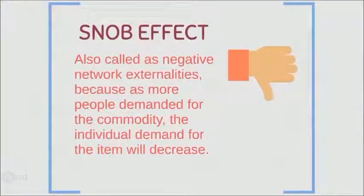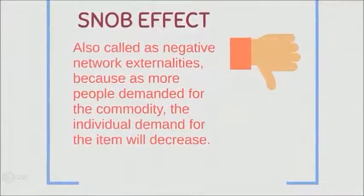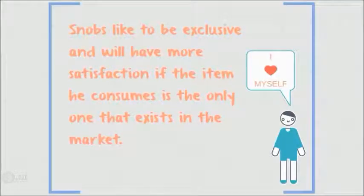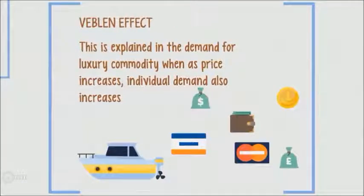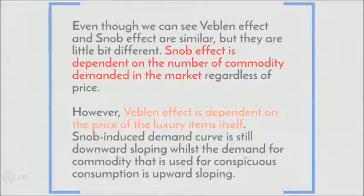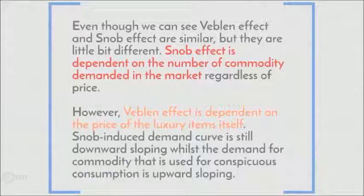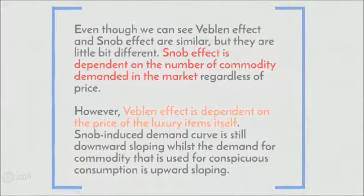The snob effect is also called negative network externalities because as more people demand the commodity, the individual demand for the item will decrease. Snobs like to be exclusive and will have more satisfaction if the item they consume is the only one that exists in the market. The Veblen effect is explained in the demand for luxury commodities when, as price increases, individual demand also increases. Snob effect is dependent on the number of commodity demanded in the market regardless of price, while Veblen effect depends solely on the price of the luxury item. The snob-induced demand curve is still downward sloping, while the demand for conspicuous consumption commodities is upward sloping.